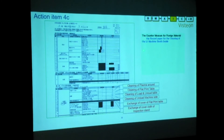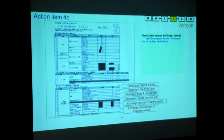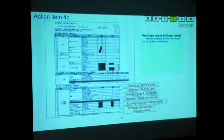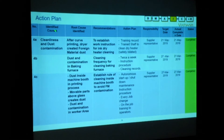Other countermeasures for foreign material include cleaning of the plasma location, cleaning of the flat print table, and cleaning of loading and unloading areas, the machine side flat print table, and the cover cloth inspection area. Different areas where cleaning is most necessary have been identified to ensure the foreign material defect is reduced to the greatest extent possible. All actions have been documented in a matrix with root cause, recommended actions, evidence, and relevant training records with pictorial representations. All actions are completed against targeted dates.